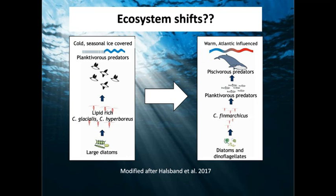Copepods and arrow worms do similar depth migrations and encounter a wide range of pH. Looking at potential ecosystem shifts: currently in cold, ice-covered systems, large diatoms do well and are consumed by large, fat-rich copepods — previously called 'the McDonald's of the ocean' because of their high fat content. Planktivorous predators like little auks specifically target these copepods. If these large copepods suffer due to environmental changes, the little auk could suffer too.